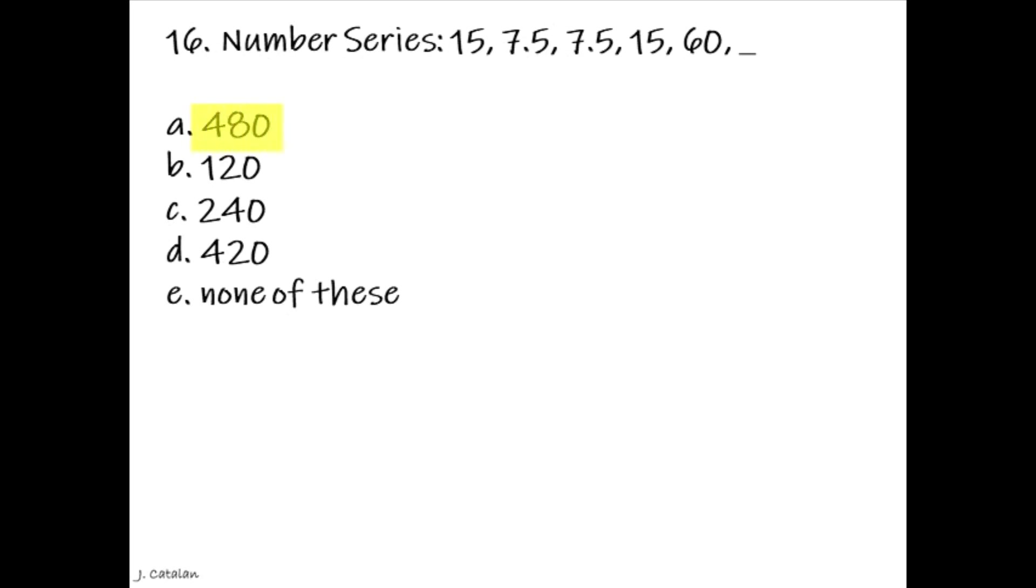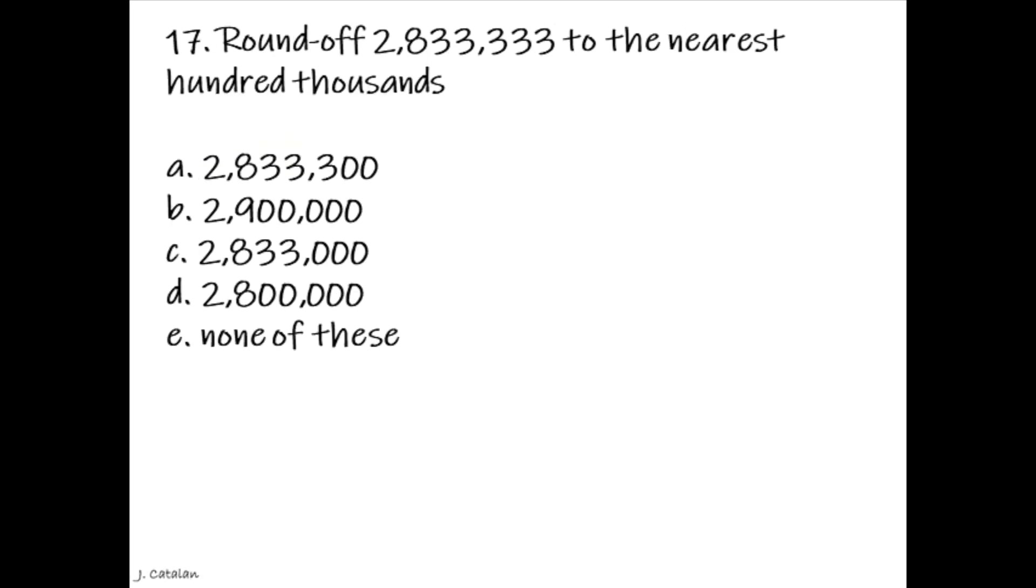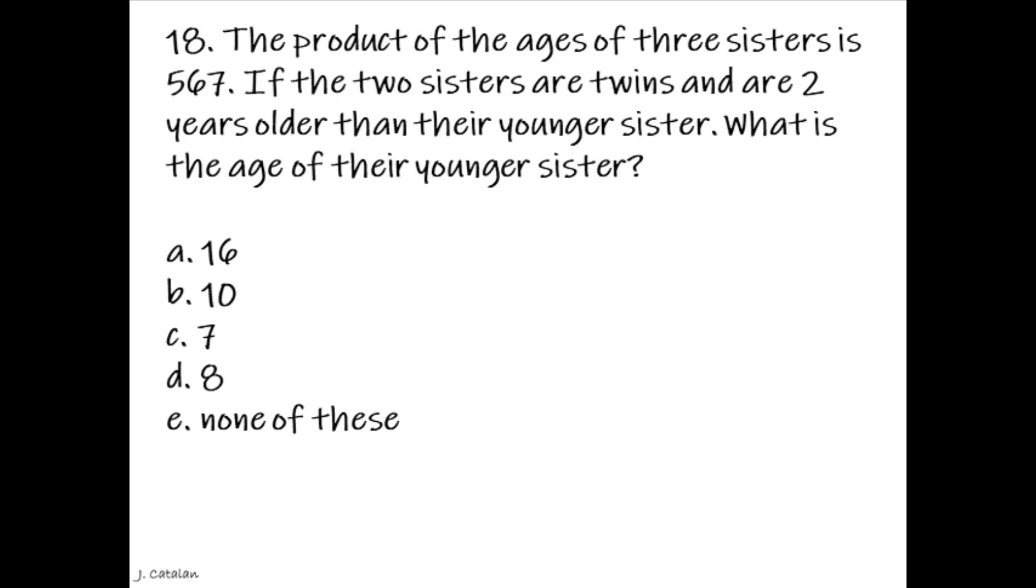Question: Round off 2 million 833,333 to the nearest hundred thousands. Answer: The product of the ages of three sisters is 567. If the two sisters are twins and are two years older than their younger sister, what is the age of their younger sister? Answer: 7.